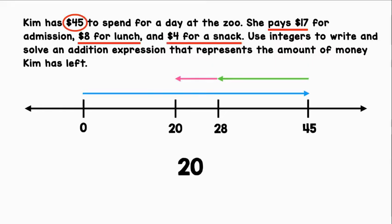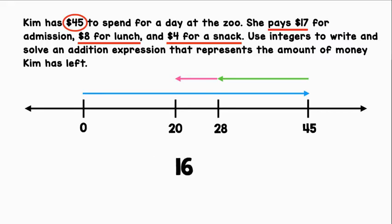Lastly, she pays $4 for a snack. So, we can add negative 4. Again, our sum is going to be positive, because 20 has a greater absolute value, and it is positive. So, let's find the difference of the absolute values. 20 minus 4 is 16. Kim has $16 left.